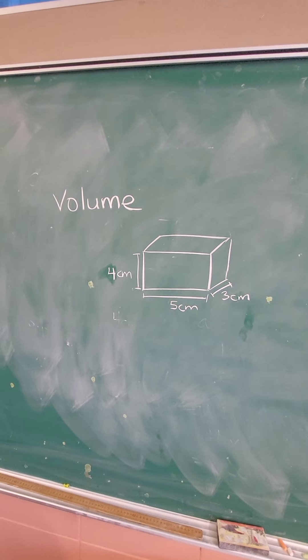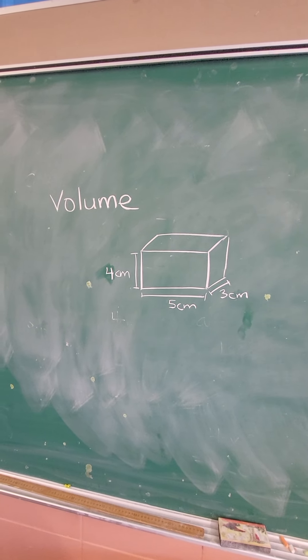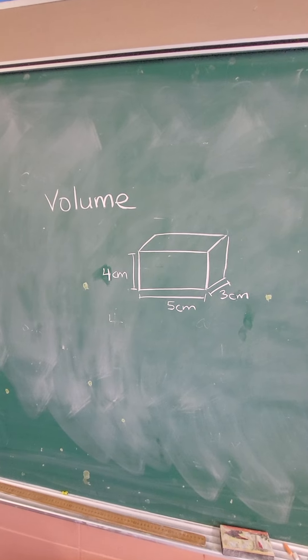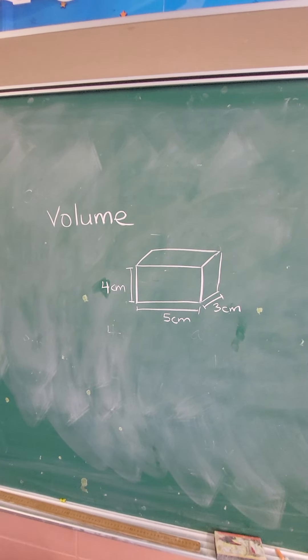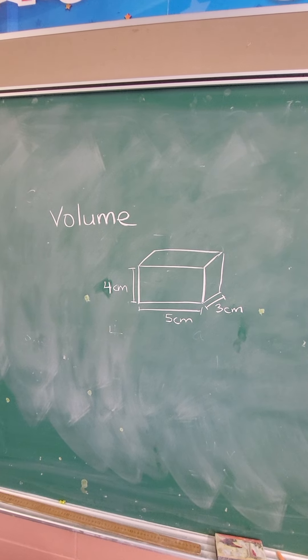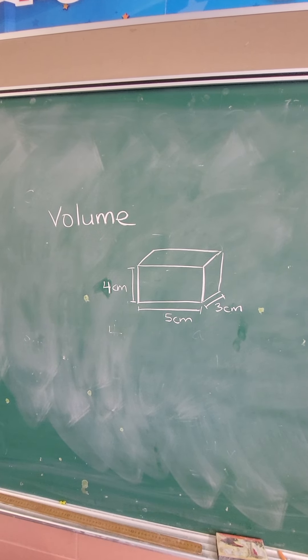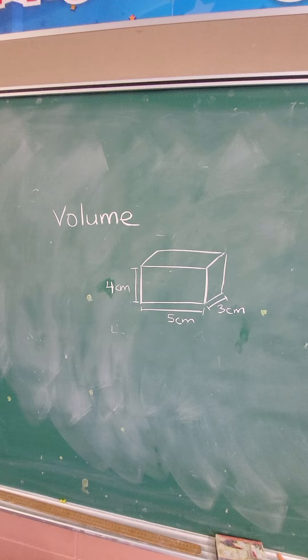In the third video of this measurement series, we're going to talk about volume. So before we spoke about perimeter around an object, area is the space inside a two-dimensional or 2D object.